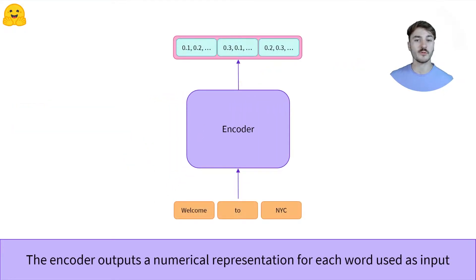We'll use a small example using three words. We use these as inputs and pass them through the encoder. We retrieve a numerical representation of each word.